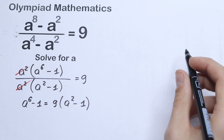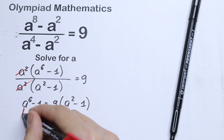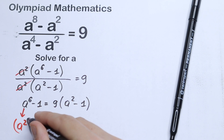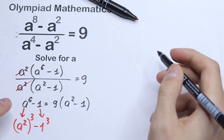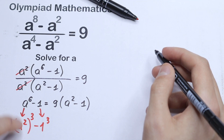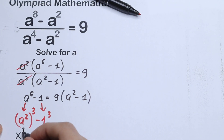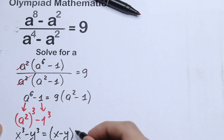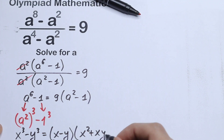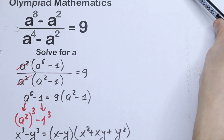Let's write a to the sixth power as a cube to the second power. Moreover, we can write this as a squared to the third power, and minus 1 as minus 1 cubed. As you can see, this is the difference of cubes formula. We have one number cubed and a second number cubed. The formula is: x cubed minus y cubed equals x minus y, times x squared plus xy plus y squared. Instead of x and y we have a squared and 1, so we can apply this formula right here.